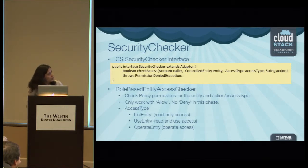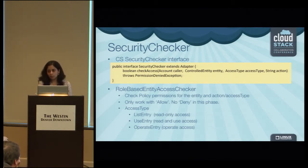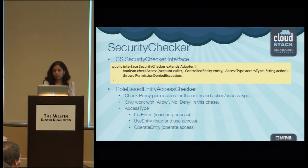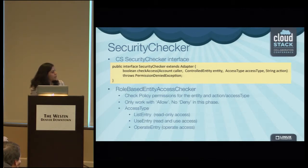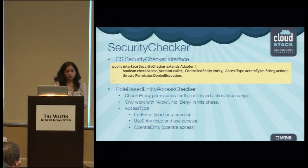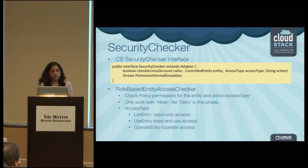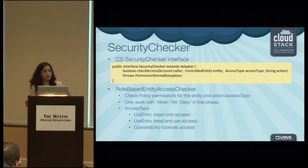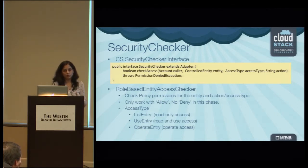There are two parameters in the security checker: access type and action. Action is mapped to the API name in CloudStack. But within a given API, multiple entities may be operated on in different ways, so we have an enumeration of access types. List entry defines read-only access, use entry defines read-and-use access, and operate entry defines operate access. The difference between list and use is that with list entry on a template you can list that template, but with use entry you can list it as well as use it — for example to launch a VM from it.